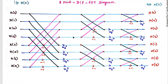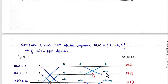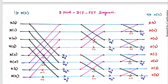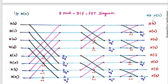You already know the Decimation in Time diagram. In the DIT algorithm, the input is applied in bit-reversed order and the output is taken in natural order. But here in the DIF algorithm, the input is applied in natural order — x(0), x(1), x(2), x(3), x(4), x(5), x(6), and x(7) in the same order. The output taken from the DIF algorithm is in bit-reversed order.